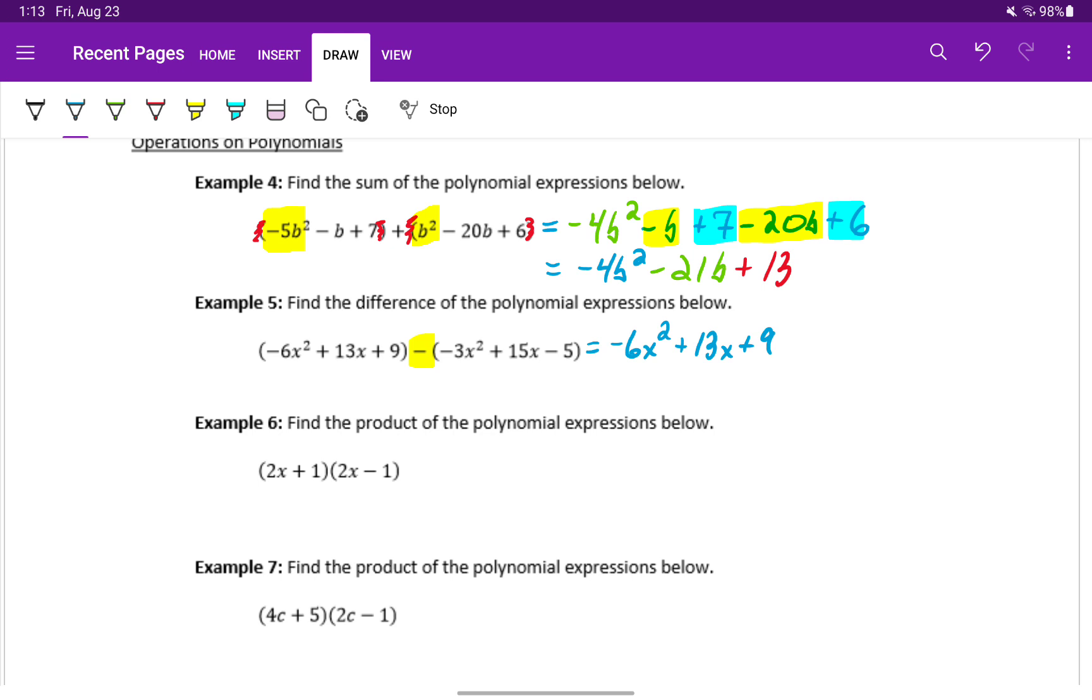And when we get to the second polynomial, now we'll flip the sign of each term, because we're multiplying each term by negative 1. This will become plus 3x squared minus 15x plus 5.